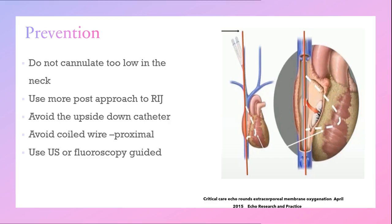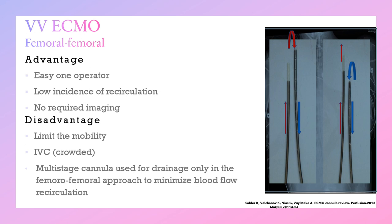Another form of veno-venous ECMO is femoral-femoral cannulation, or FEM-FEM. Its advantages are that it is easy to perform by a single operator, has a lower incidence of recirculation, and does not require imaging. As shown in the picture, the drainage cannula should be lower than the return cannula by about 15 cm. If the drainage cannula is placed higher than the return cannula, there will be a higher incidence of recirculation. A multi-stage cannula is used for drainage only in the femoral-femoral approach, to decrease blood flow recirculation.